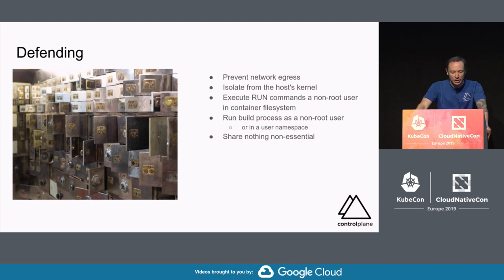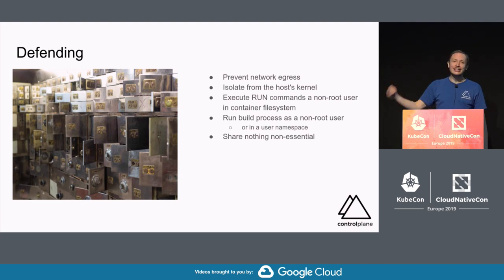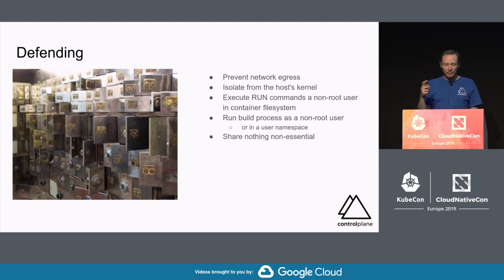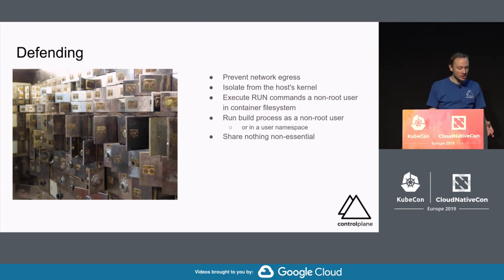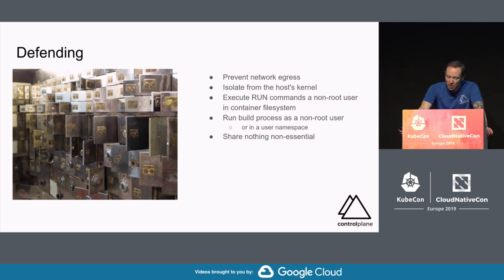To protect our builds, we can prevent network or internet-bound egress — it's better to pull dependencies pre-build or from a local repository so we know they won't change. We can isolate ourselves from the host's kernel using VMs. We can run RUN commands as a non-root user in the build's file system, avoid access to the Docker socket, avoid changing global state in a container, and run build processes as a non-root user or in a user namespace. This prevents leakage of UID privileges from the host. We should be in as many namespaces as possible.